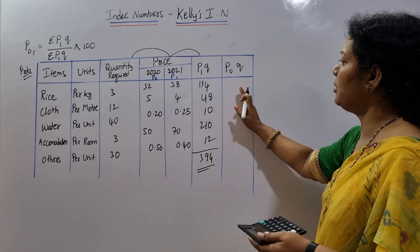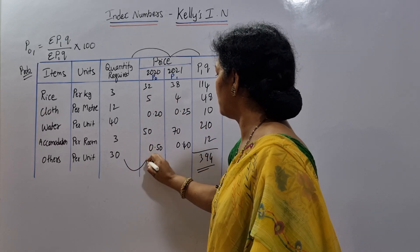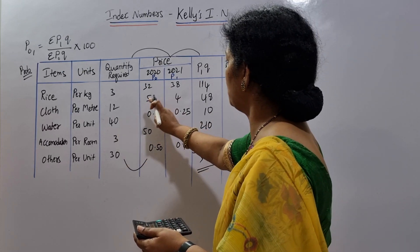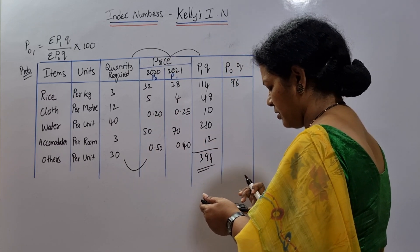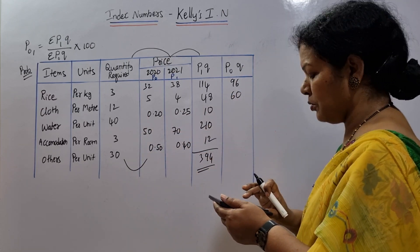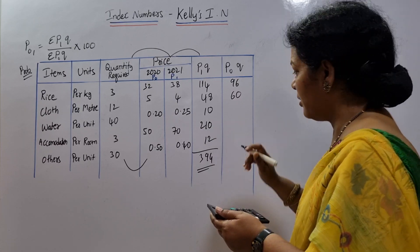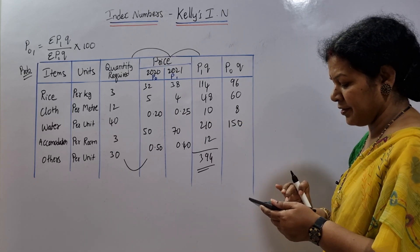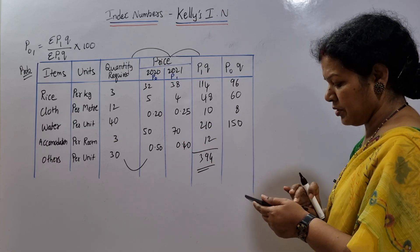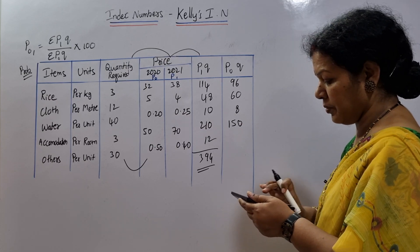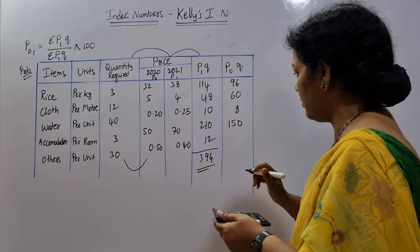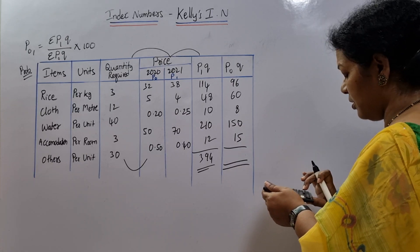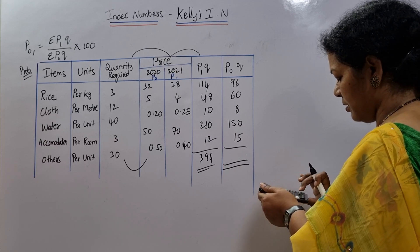Now similarly for P0Q: P0 into Q — 3 into 32 gives 96. Next, 12 into 5 gives 60. 40 into 0.20 gives 8. 3 into 50 gives 150. Next, 30 into 0.50 gives 15. Totalling these: 96 plus 68 plus 150 plus 15 comes to 329.